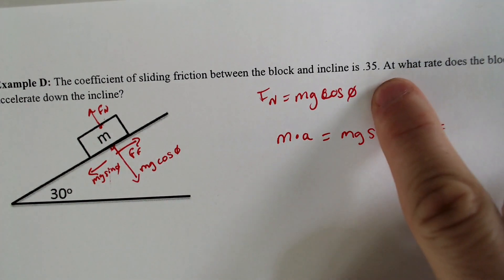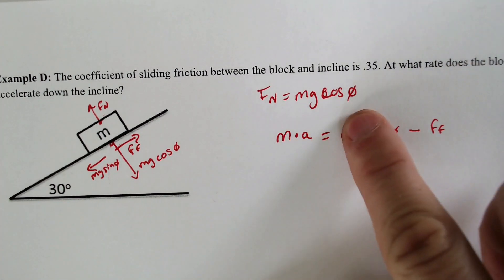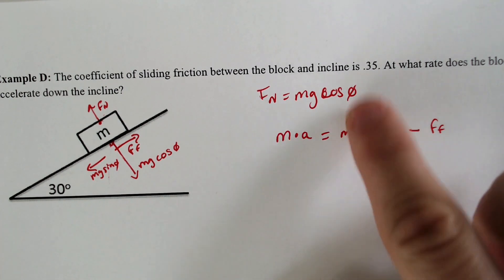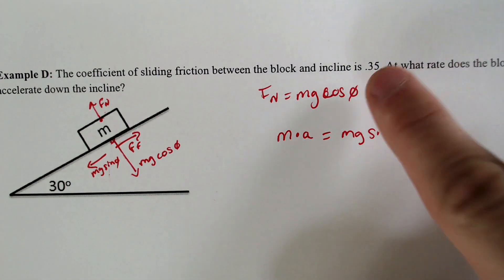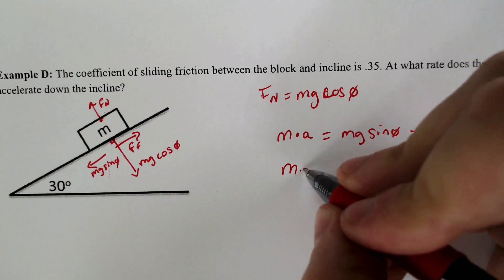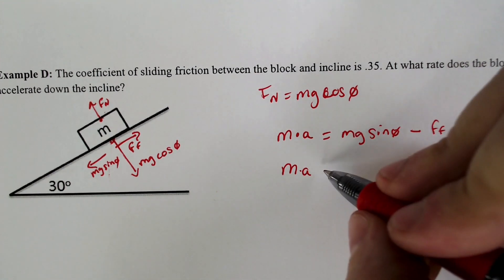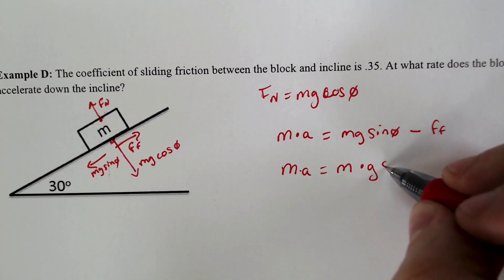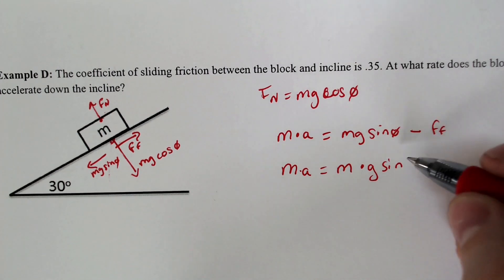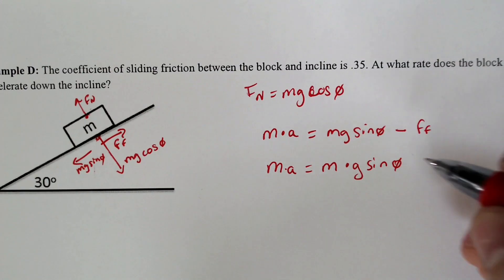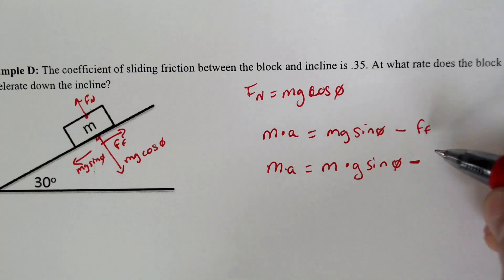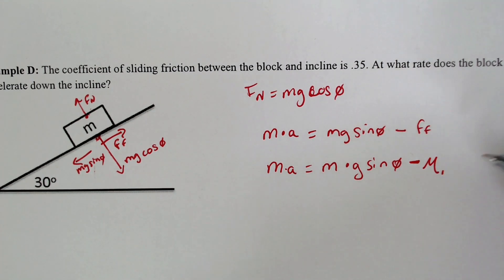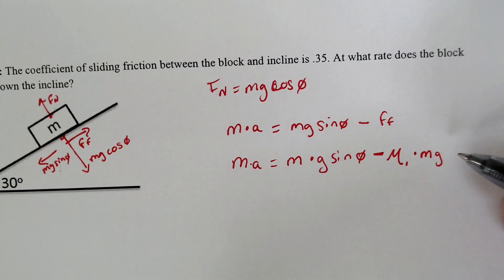We have to deal with the friction coefficient. You take your normal force and multiply by the coefficient of friction, which is 0.35. So mass times acceleration equals mg sine theta minus the friction coefficient times mg cosine theta — keeping it all in variable form for now.